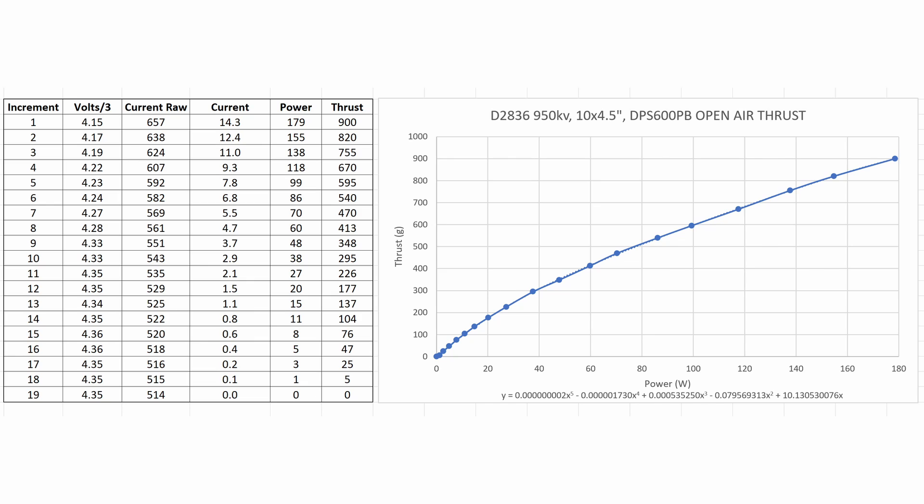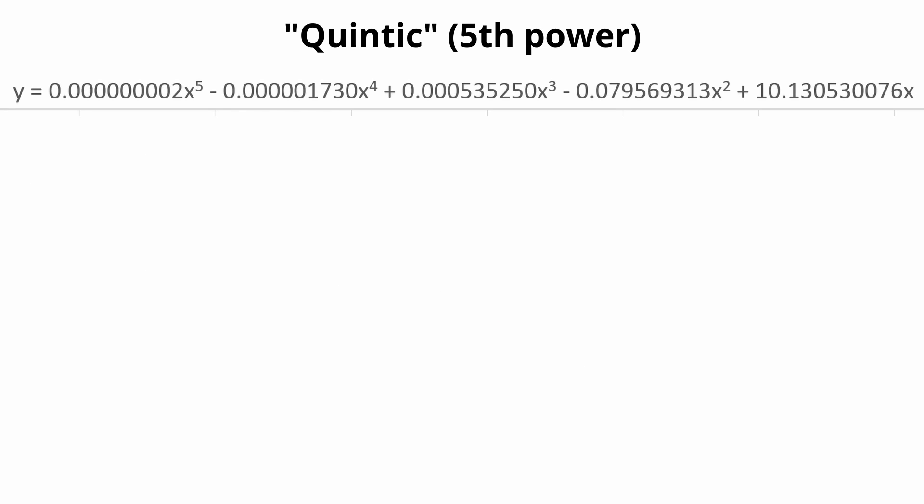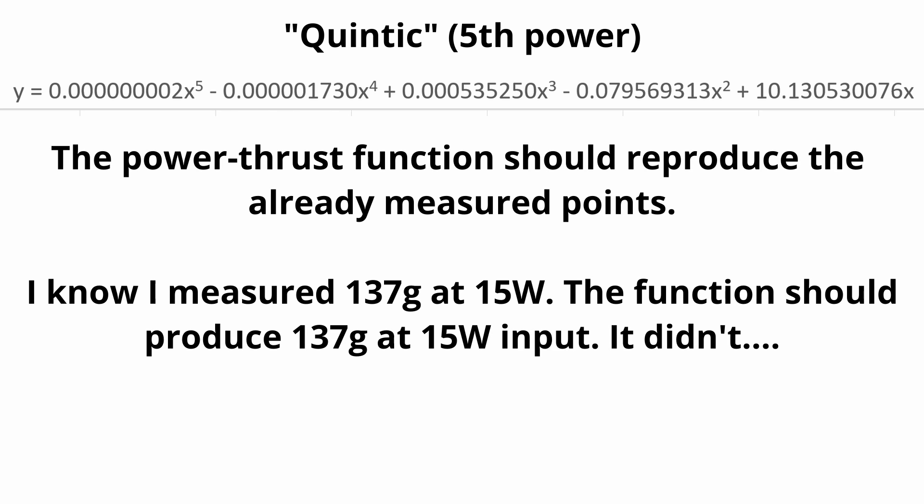Except when — once again going off on another diversion — if you use all the points just as I recorded them, then in order to get a reasonably accurate curve and equation, I think I was using a quintic formula with all these horrible coefficients. And even then it wasn't producing the best results; I would put in a power which I know I measured, but I would not get the thrust that I know I measured back out of the equation.